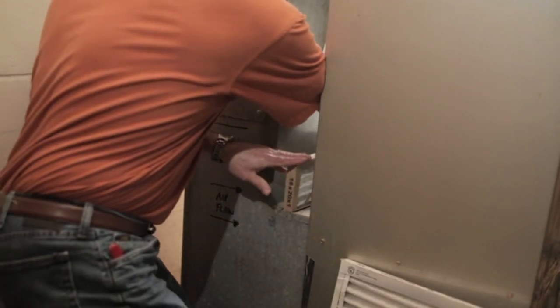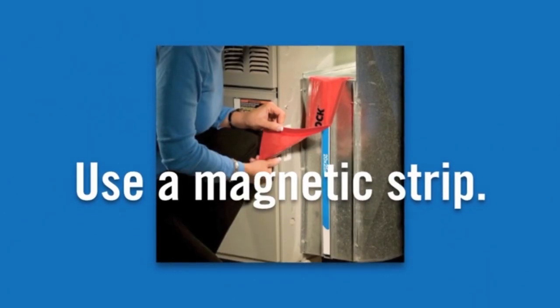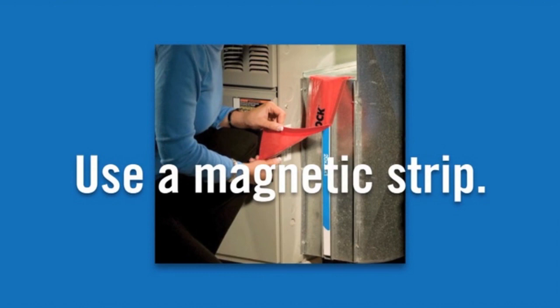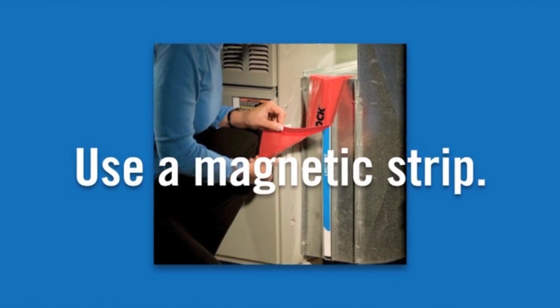If you don't have a cover on your filter rack, this open gap here can release a lot of airflow, causing your furnace to work harder than necessary. An easy fix is a magnetic strip like this that you can place over the top to keep air from leaking out.